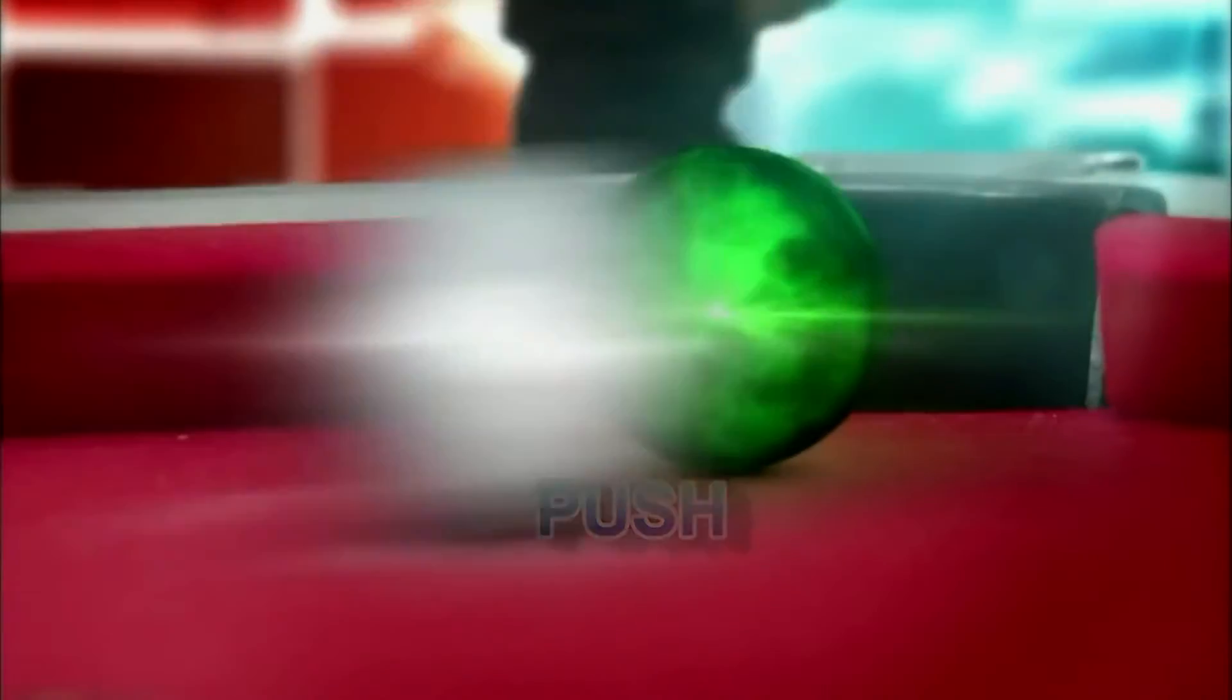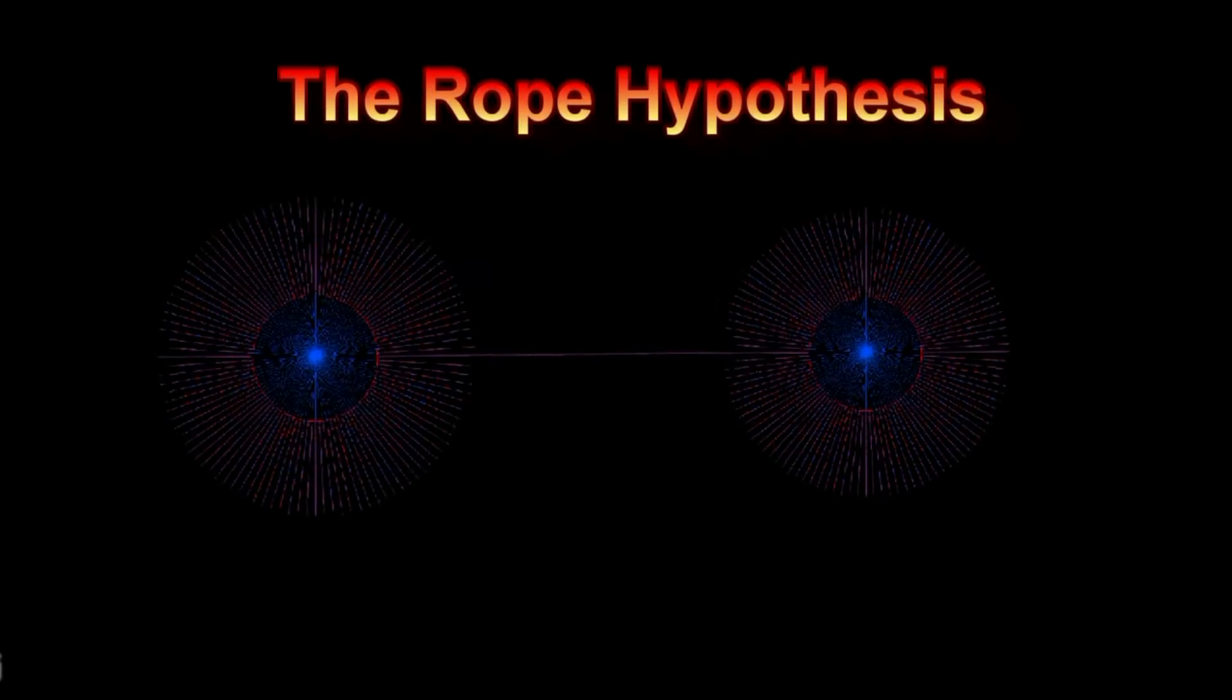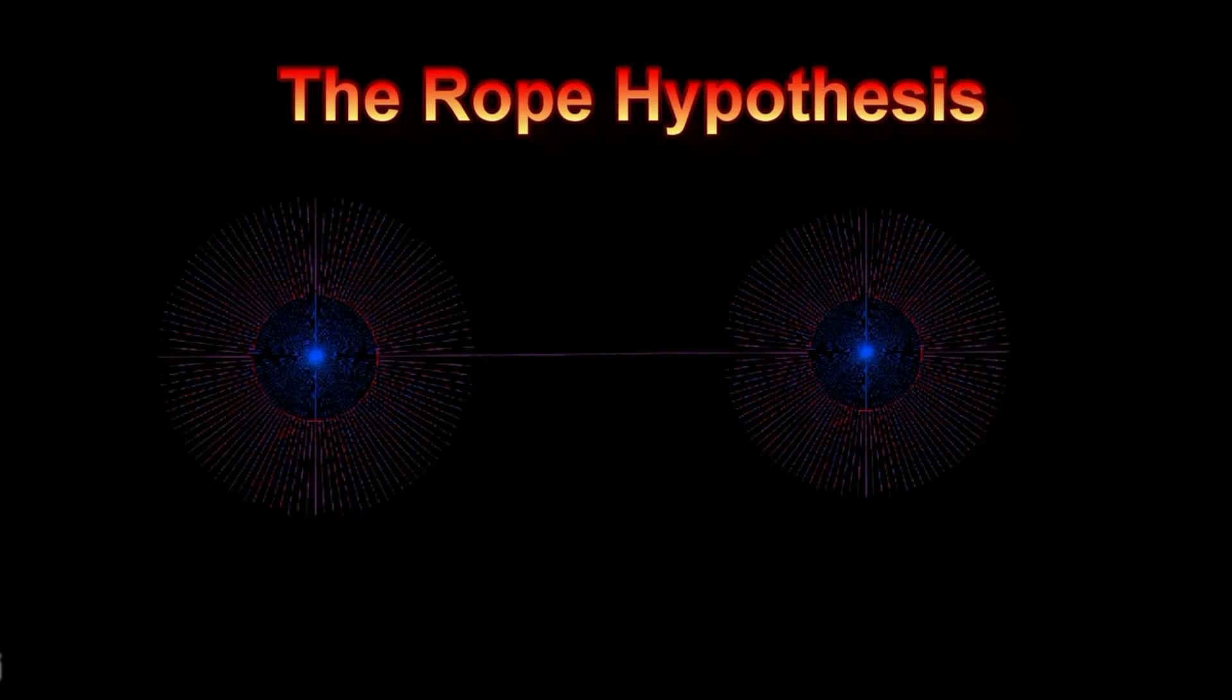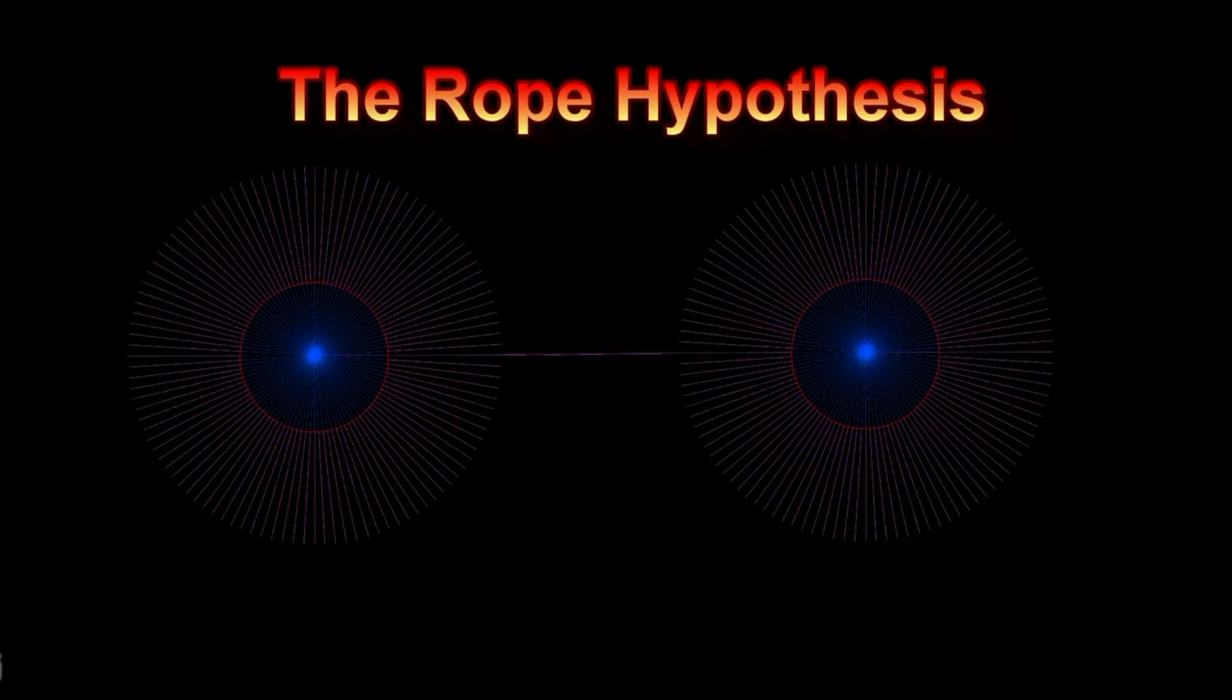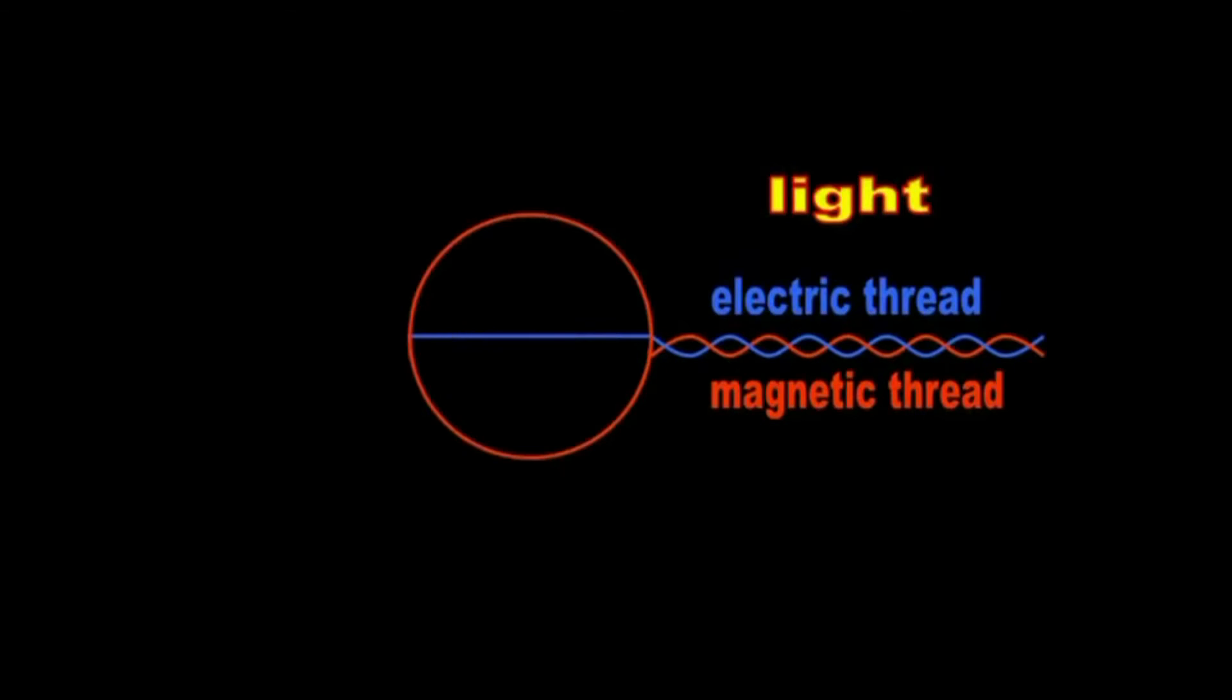A rope-like entity that physically and permanently binds them. The electric thread forms the star-like proton in the nucleus. The magnetic thread coils around and weaves the electron shell that encapsulates the nucleus.